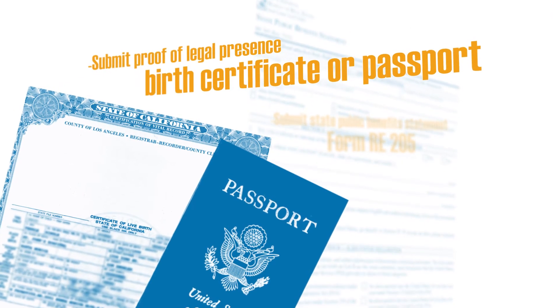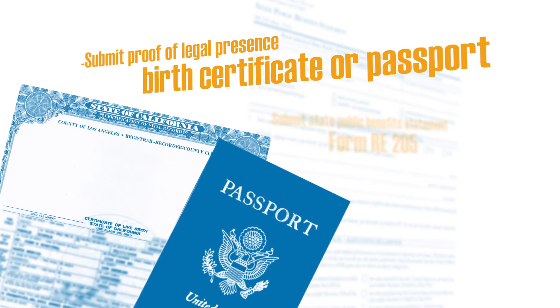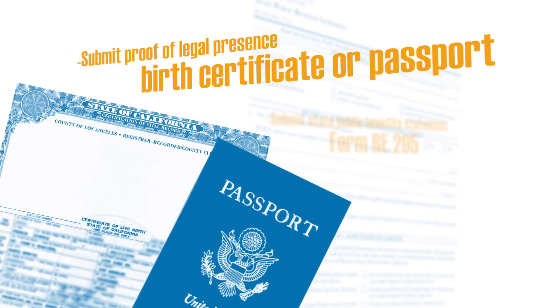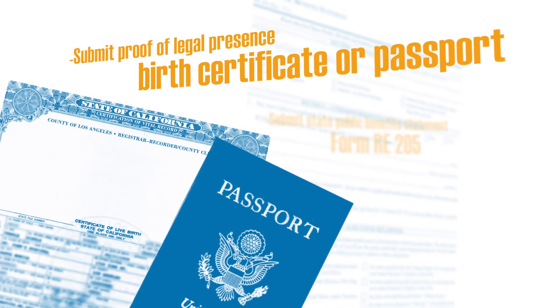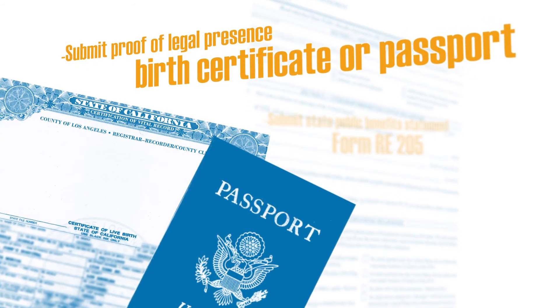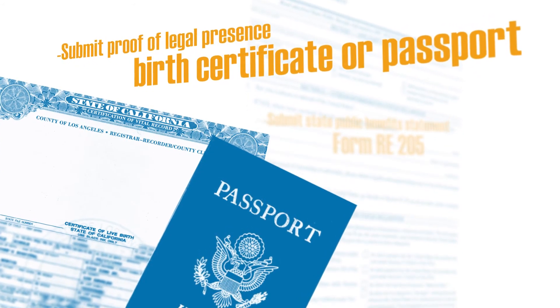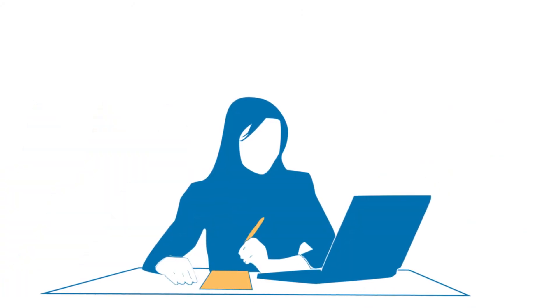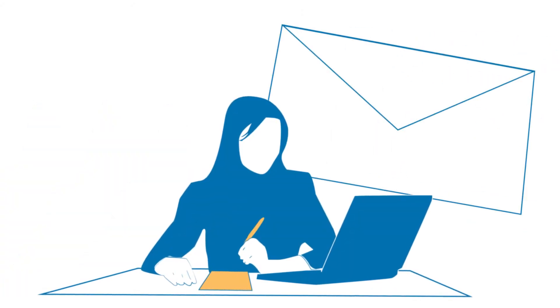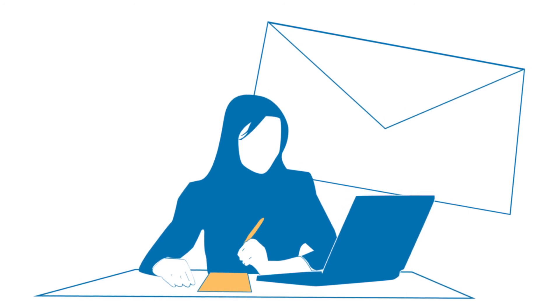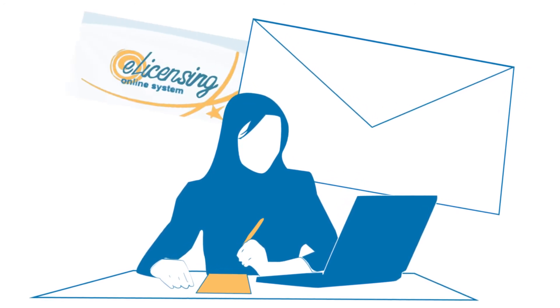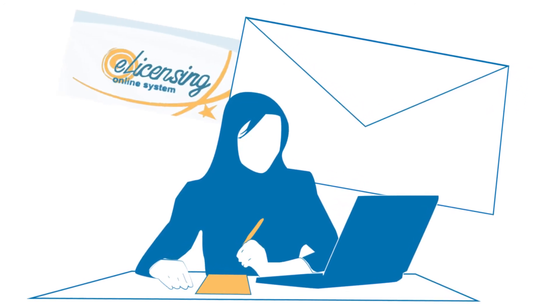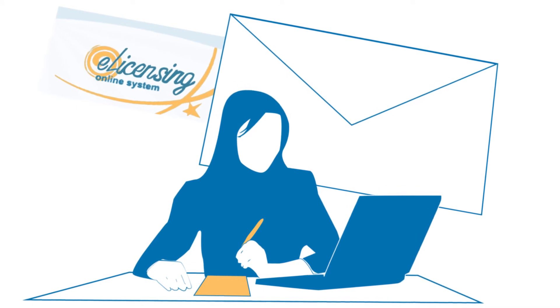Submit the state public benefits statement form RE-205 along with the required proof of legal presence documentation with your application. The most common document that can be used for establishing proof of legal presence is a birth certificate or U.S. passport. Once your application has been processed, you will receive a letter informing you that your license has been issued. License certificates can be printed online using our e-licensing system.